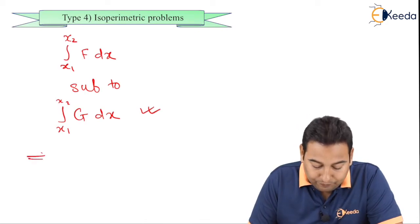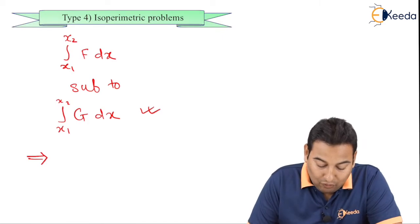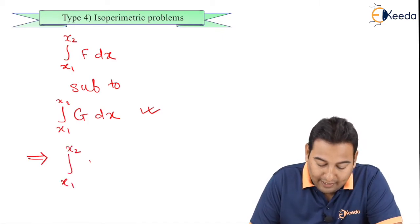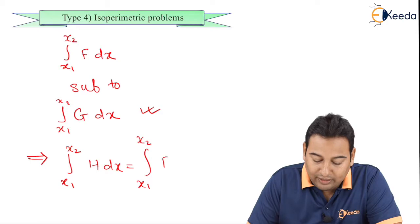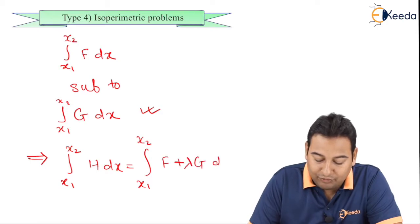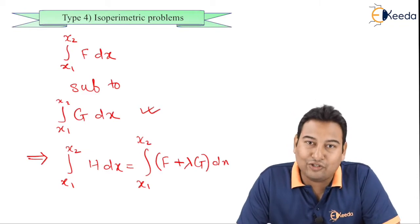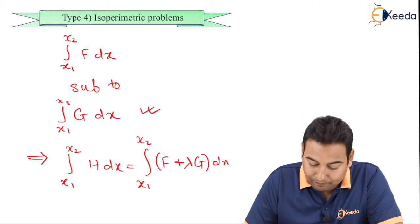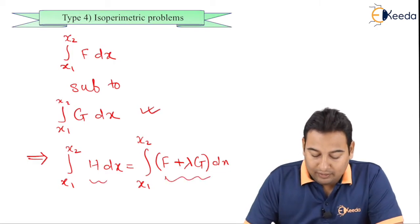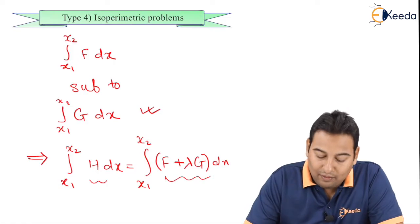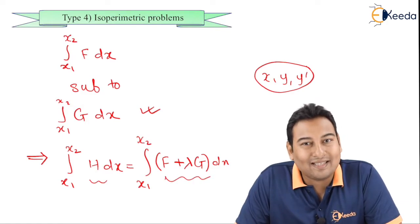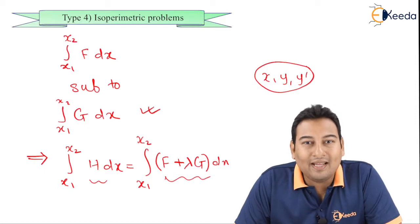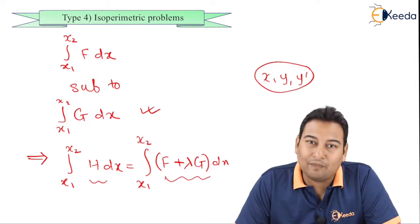Whenever we get this type of problem, first of all you need to find h. This h is obtained from f plus lambda g — this is also called Lagrange's method. First, find f plus lambda g and name it h. This h, or f plus lambda g, will be in terms of x, y, and y dash. We are now ready with the new functional h; initially it was f, and we got h. For solving h, we need Euler's equation.